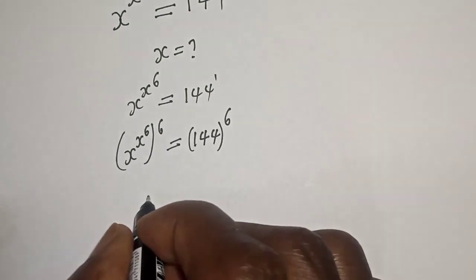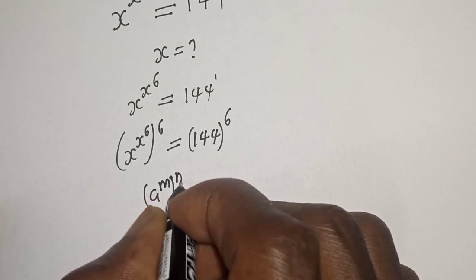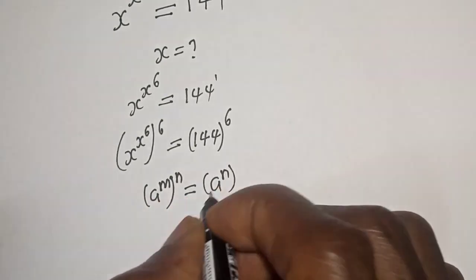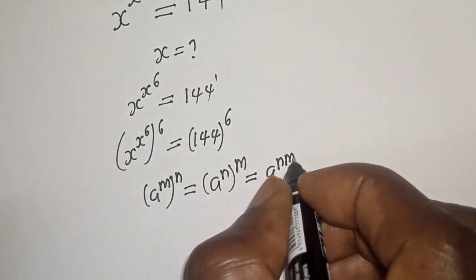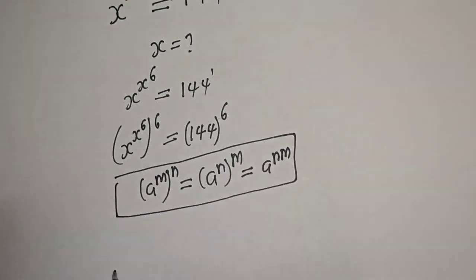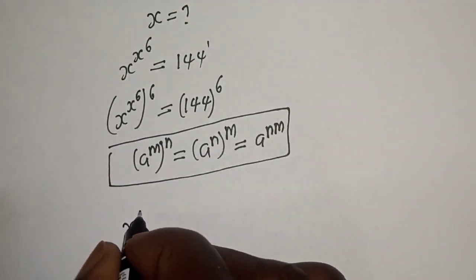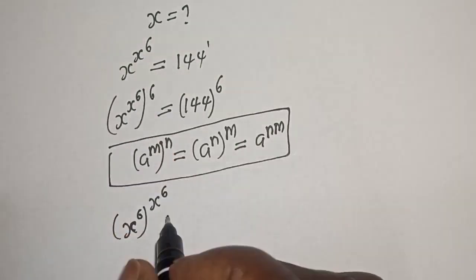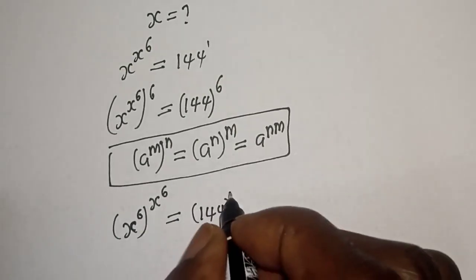Take note of this: a raised to power m, to the power of n, is equal to a raised to power n to the power of m — this is equal to a raised to power n·m. So s raised to power 6, to the power of s raised to power 6, from the left hand side, is equal to 144 to the power of 6.